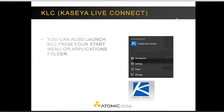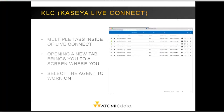Once you launch LiveConnect, it will prompt you for your username and password, then take you to a screen where you can select agents to work on. Kaseya LiveConnect supports multiple tabs, so you can work on as many systems at the same time as you need and click between the tabs. Clicking the plus button in the upper right-hand corner adds a new tab for another system.